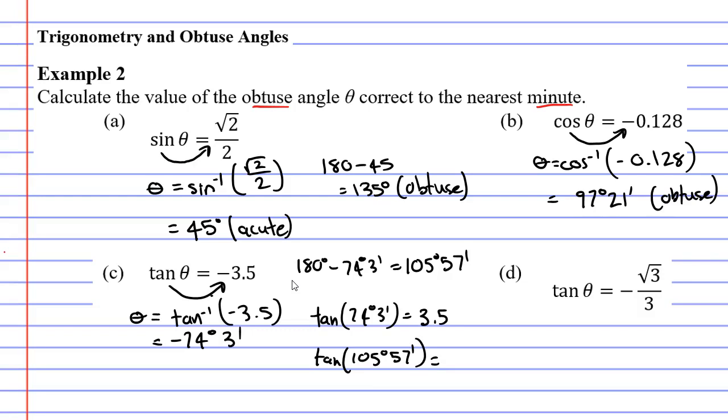Well, because it's supplementary to 74 degrees, 3 minutes, I should get the same value of 3.5. But we also learned that if you apply the tan function to a supplementary angle, yes, the number will be the same, except it will be negative. And this is good because this is exactly what we wanted. We wanted a solution of negative 3.5, which means our angle theta must be 105 degrees, 57 minutes, which is obtuse.